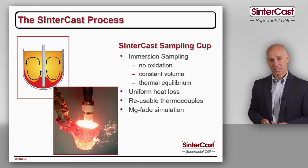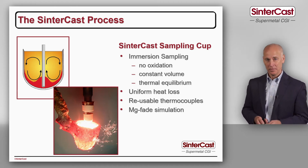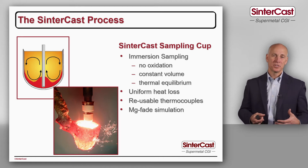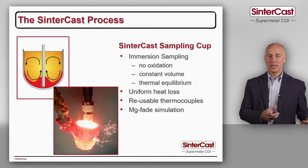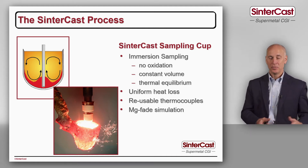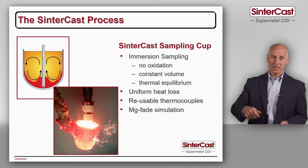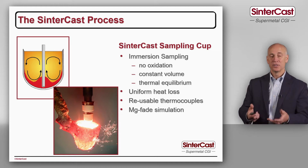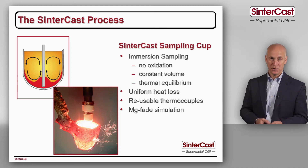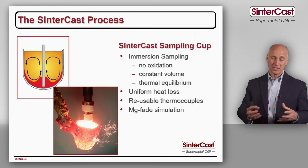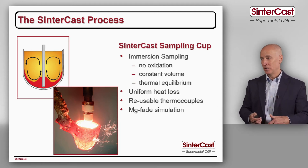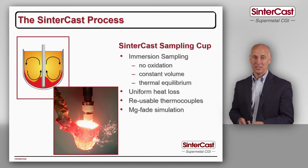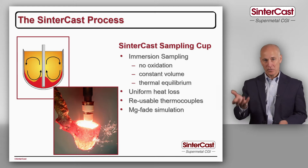Looking at the sampling cup in more detail, we can see in the video that it's an immersion sampling. This ensures that the iron inside the sampling cup is the same as the iron inside the ladle. With conventional sand cups, you have to pour the iron through the air, which exposes the stream to oxidation — there's a very high surface area to volume ratio in the stream, and when the iron goes inside the cup it may be entraining oxygen. So for us, the iron in the sampling cup is always the same as the iron in the ladle.